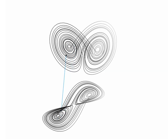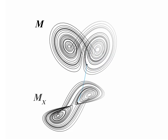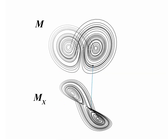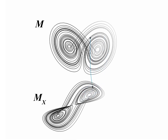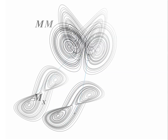Takens' theorem gives us a one-to-one mapping between the original manifold and reconstructed shadow manifolds. Here, we will explain how this important aspect of attractor reconstruction can be used to determine if two time series variables belong to the same dynamic system and are thus causally related.